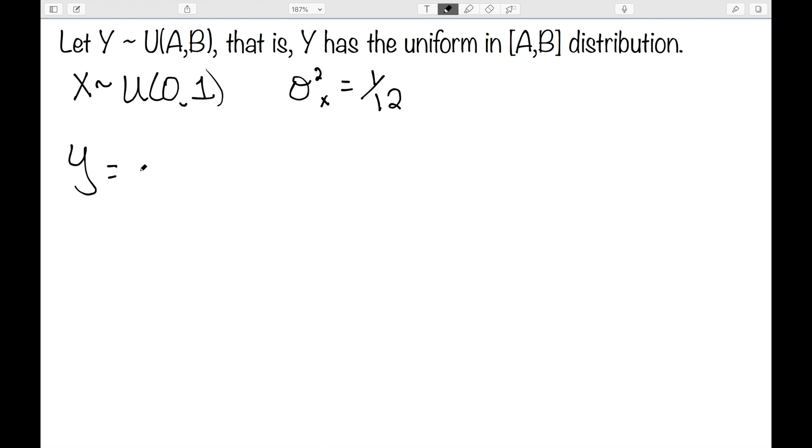We also have y equals a plus b minus a times x. So this was also discussed in a previous video, but this is how we move from the uniform distribution between 0 and 1 to the uniform distribution between any interval.